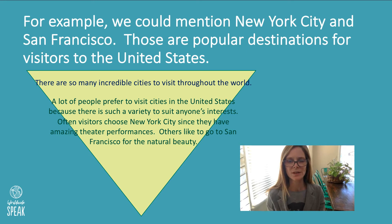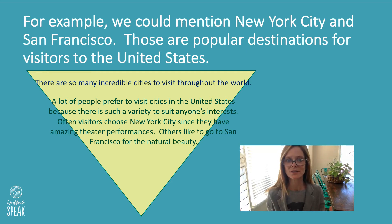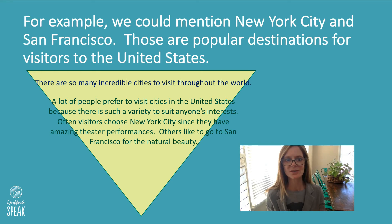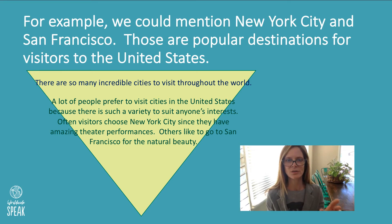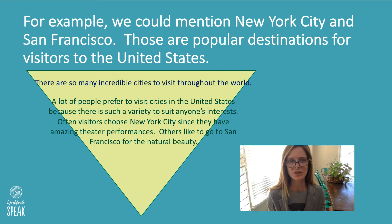So it would read like this: 'There are so many incredible cities to visit throughout the world. A lot of people prefer to visit cities in the United States because there's such a variety to suit anyone's interests. Often, visitors choose New York City since they have amazing theater performances. Others like to go to San Francisco for the natural beauty.' Do you see how we start out general — a lot of cities in the world — and then get more specific with a couple of cities in the United States?